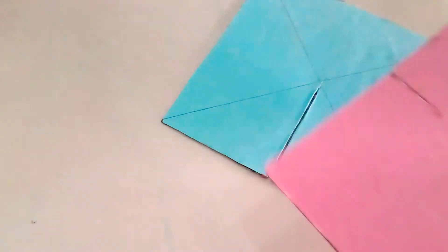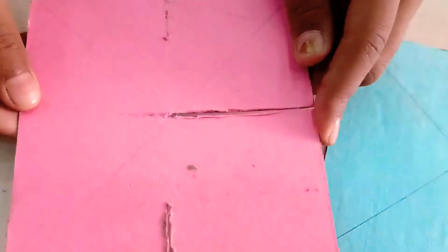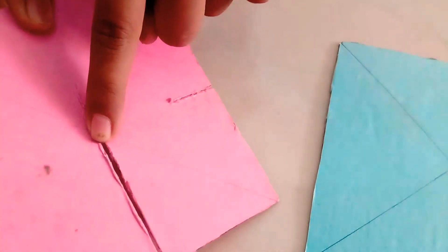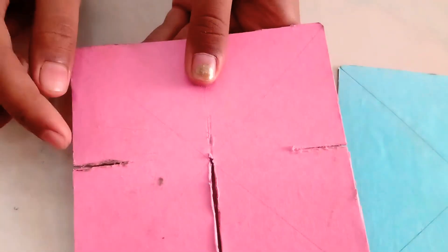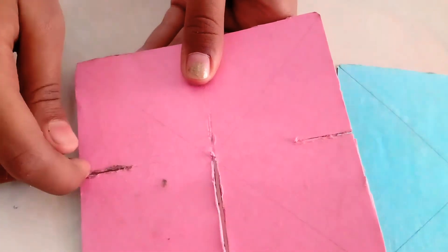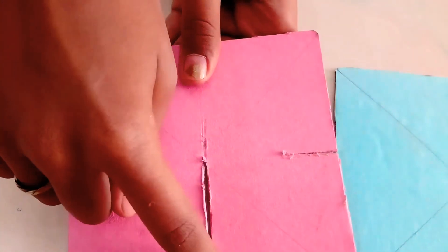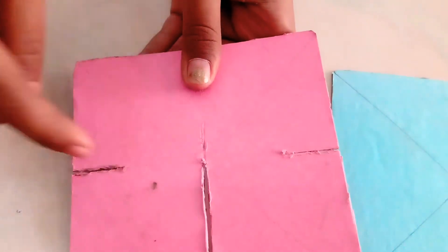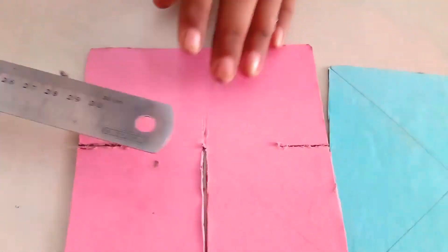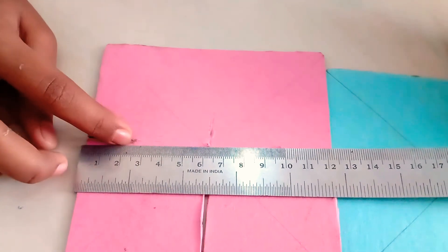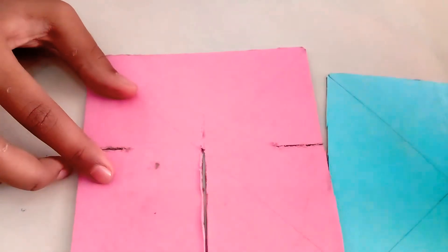In the next cardboard, you have to again draw the diagonals, and then you have to make a slit till the center point. Then you have to cut two slits on either side of the slit in between. These two slits are the measurement of 2.5 centimeters. So these two cardboards are ready.